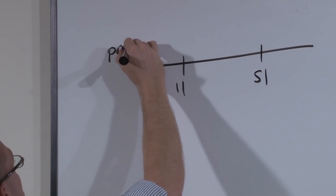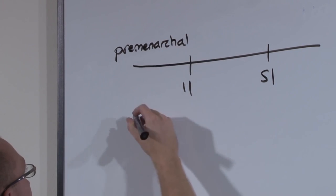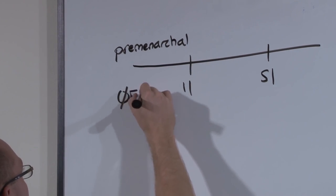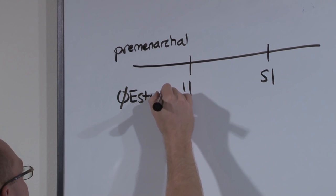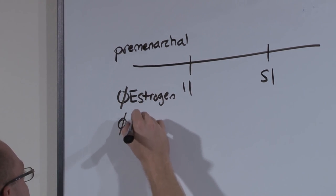So the pre-menarchal girl, who has yet to produce estrogen, has no estrogen exposure and therefore has almost no risk for endometrial cancer.